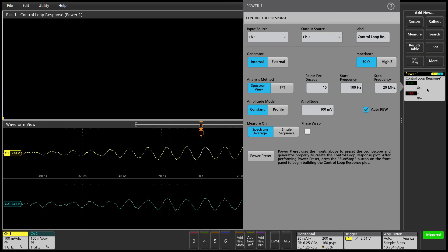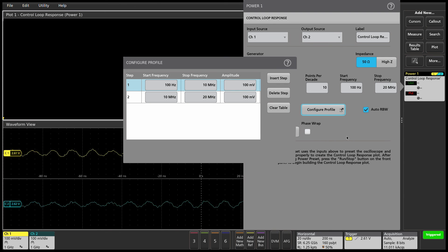The configuration allows the user to set start and stop frequencies, select constant or variable amplitude profiles, impedance, and points per decade for better plot rendering.